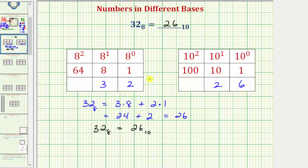So if we compare these two numbers in base 10, 32 base eight is equal to three times eight plus two times one in base 10. And 26 base 10 is equal to two times 10 plus six times one.